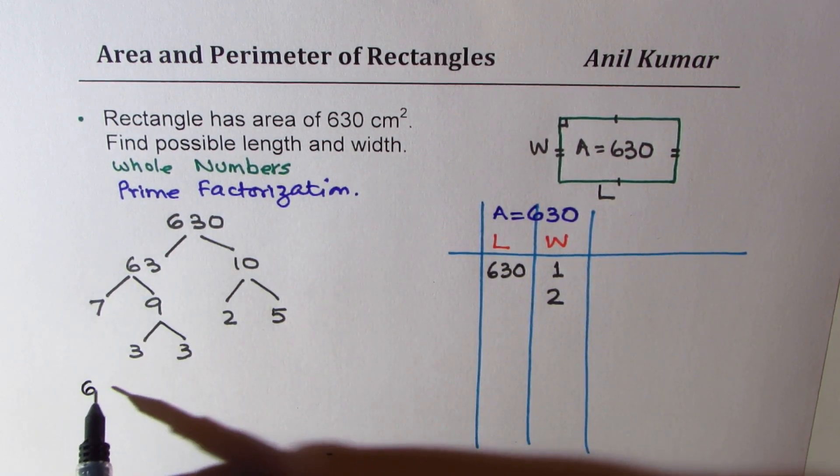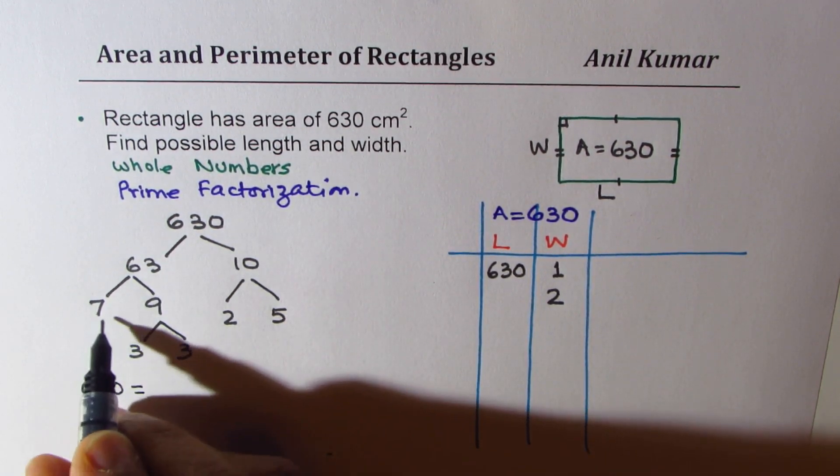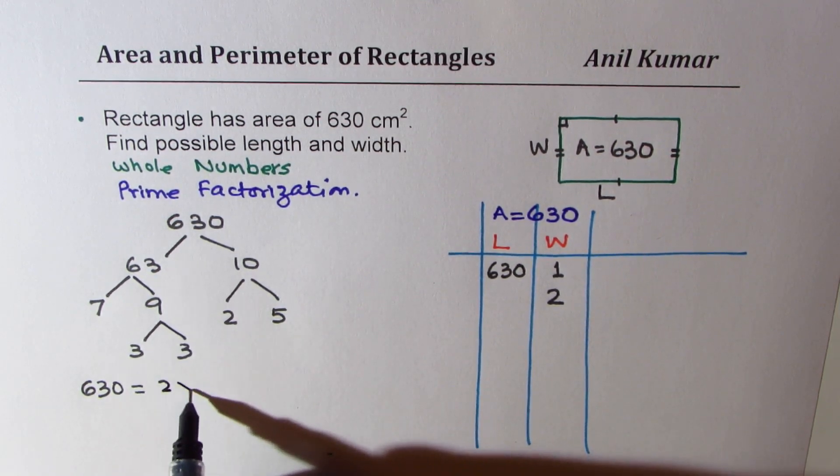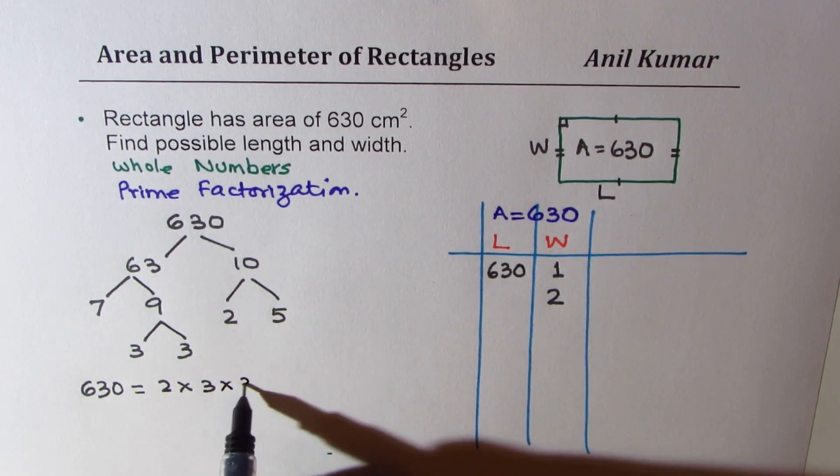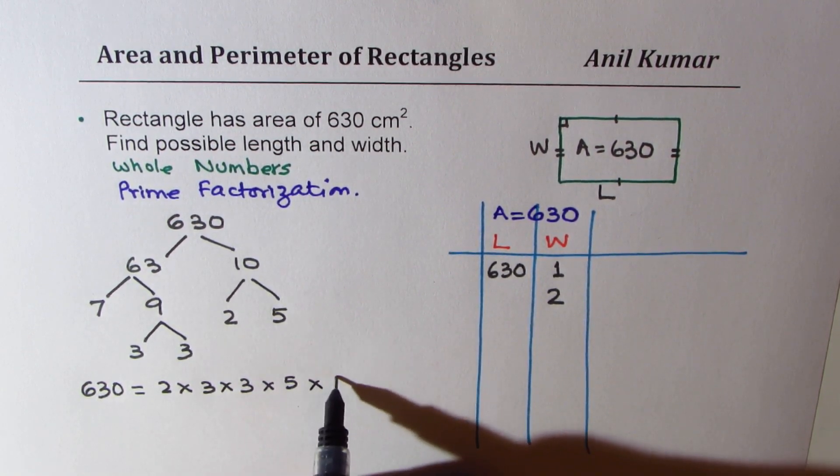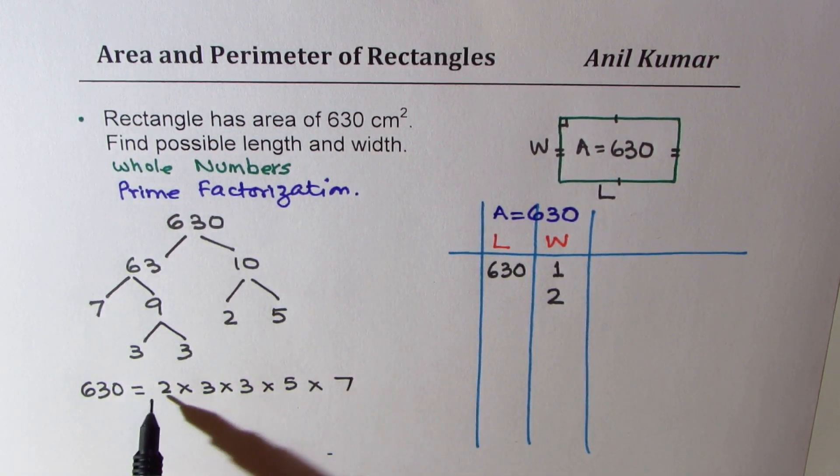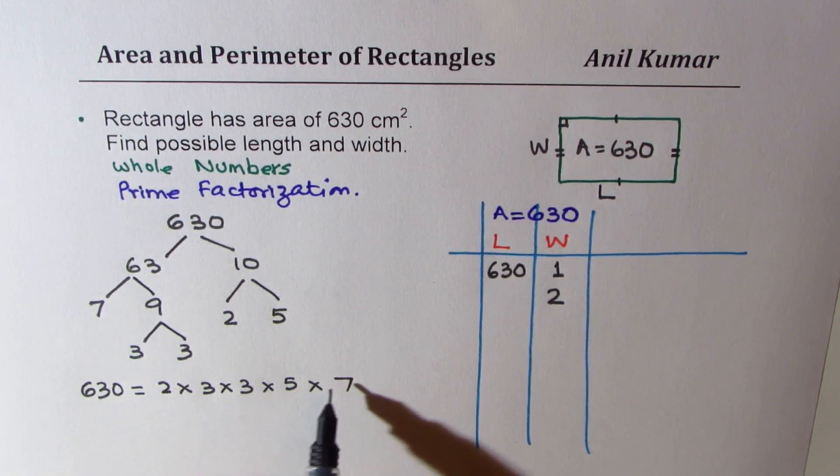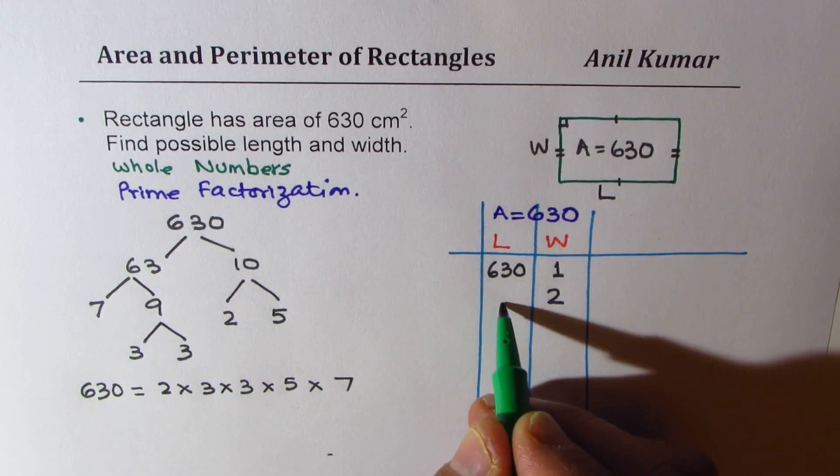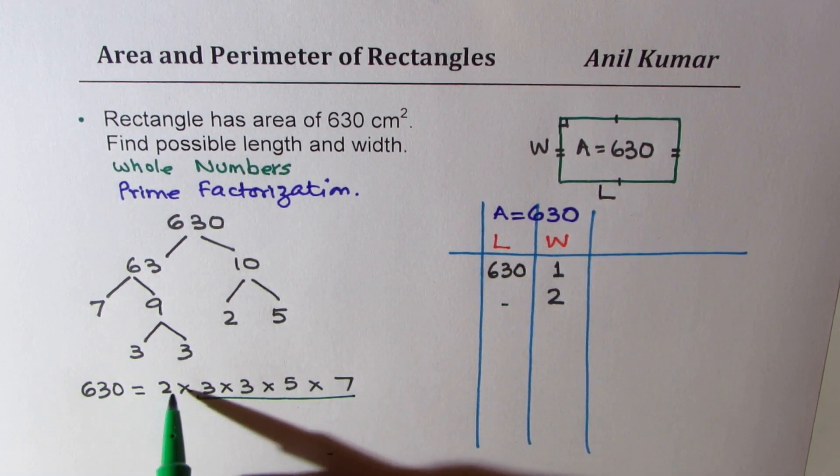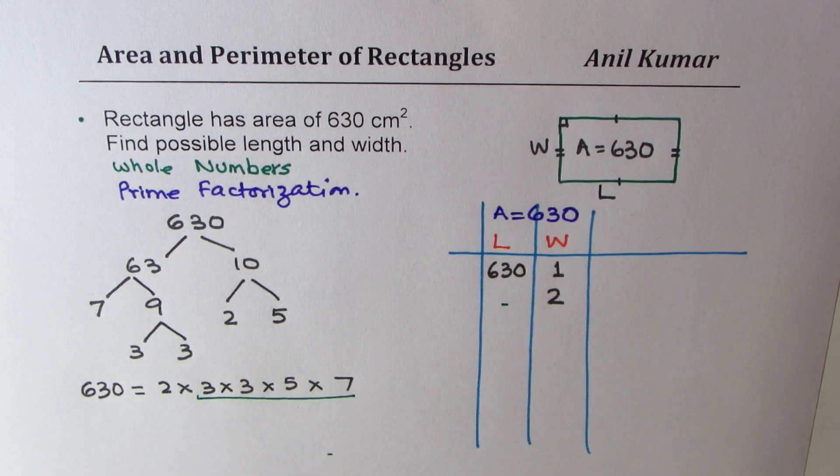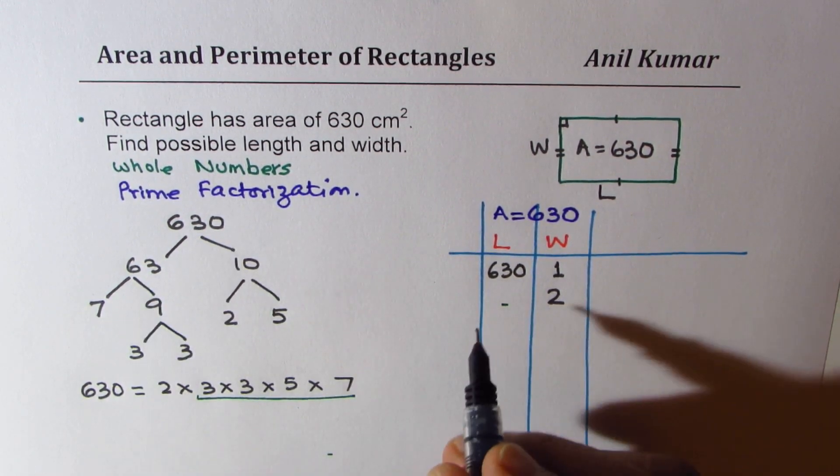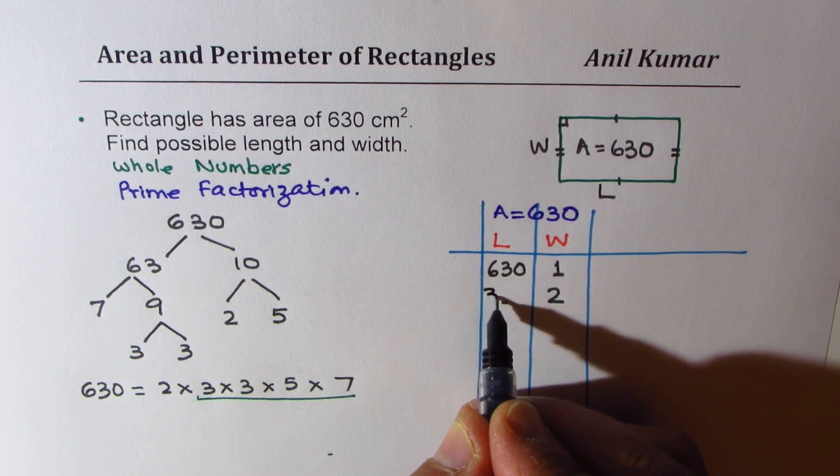So let me write down 630 as product of all these prime numbers. So what do we get here? 2 times 3 times 3 times 5 times 7. So when you multiply all these numbers, you get 630. 3 times 3 is 9, 9 times 7 is 63, and 5 times 2 is 10. Now, if I want to get the number here for 2, to multiply these numbers exclude 2. That is half of 630. So that is 315. So we could write this as 315.